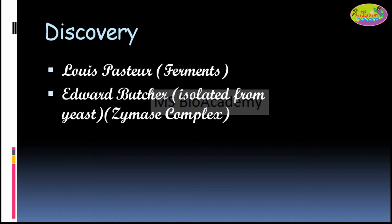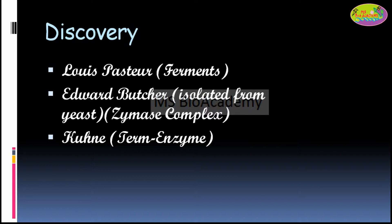Later on, Edward Butcher came and actually isolated the substances which Louis Pasteur had found from yeast. He called them the 'zymase complex.' So until this time, the term 'enzyme' had still not come up — Edward Butcher gave the term 'zymase complex,' isolated from yeast.